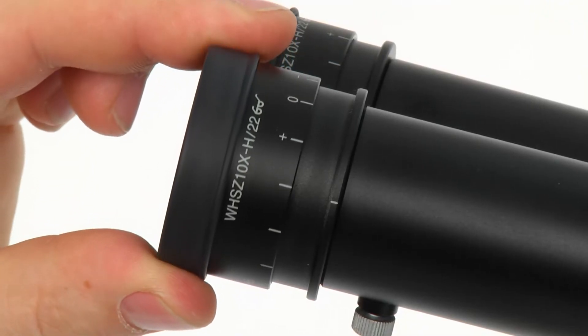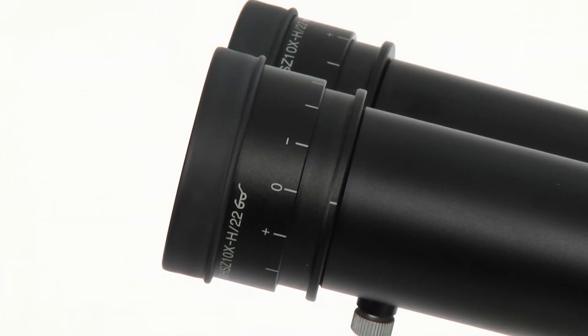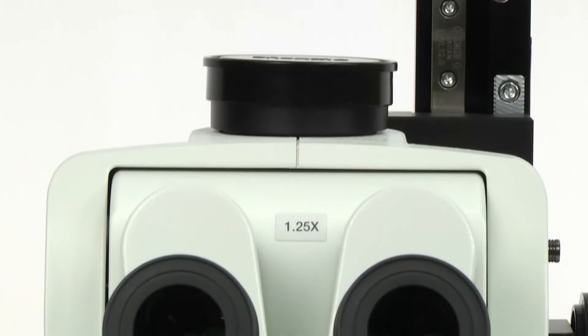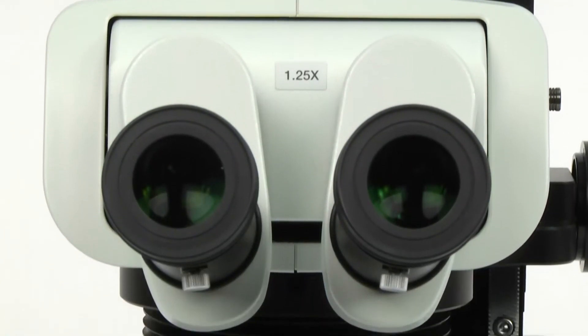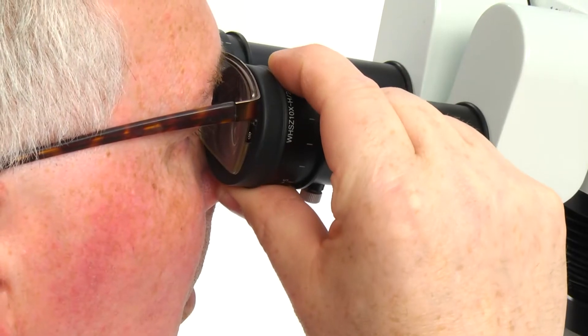To make the adjustment, turn the diopter rings of the left and right eyepieces to position zero. For operators with perfect 20-20 vision, this is the correct setting. All others require the following adjustments.